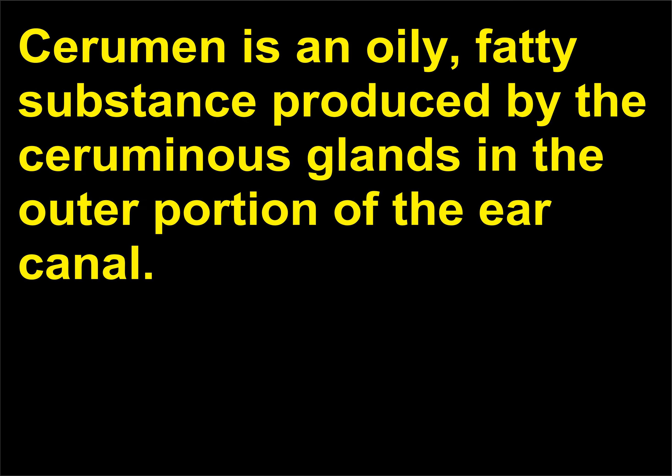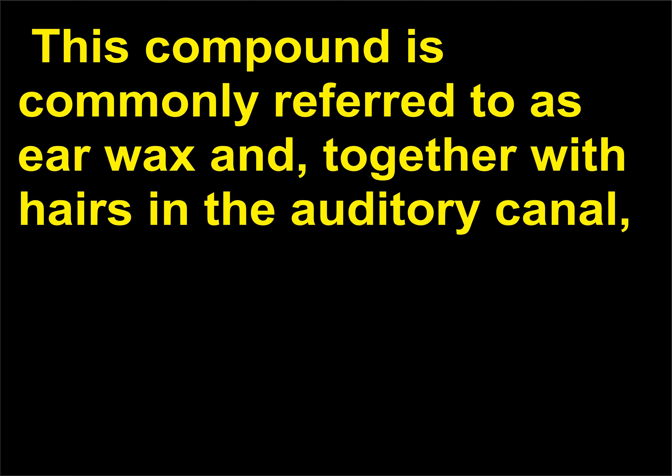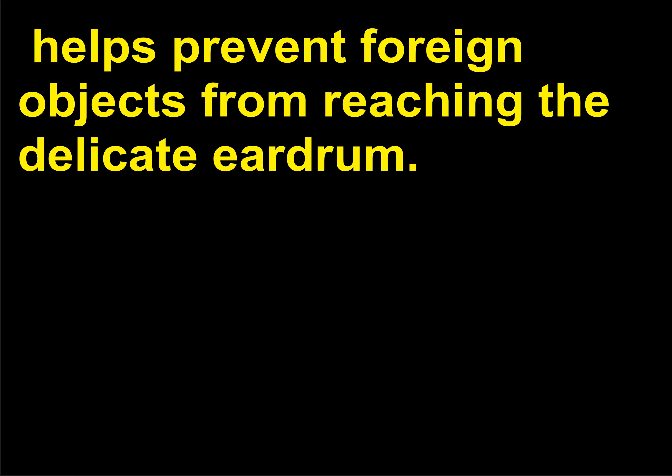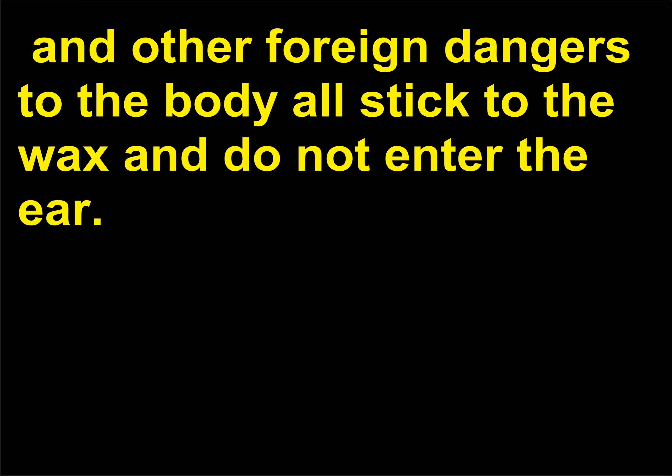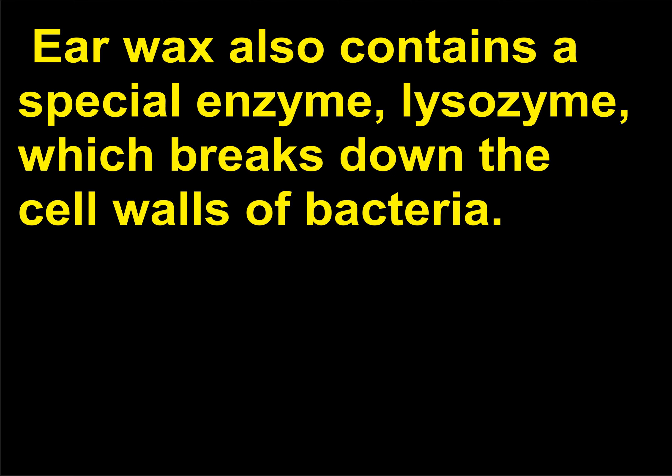What is cerumen? Cerumen is an oily, fatty substance produced by the ceruminous glands in the outer portion of the ear canal. This compound is commonly referred to as ear wax and, together with hairs in the auditory canal, helps prevent foreign objects from reaching the delicate eardrum. Dust, dirt, bacteria, fungi, and other foreign dangers to the body all stick to the wax and do not enter the ear. Ear wax also contains a special enzyme, lysozyme, which breaks down the cell walls of bacteria.